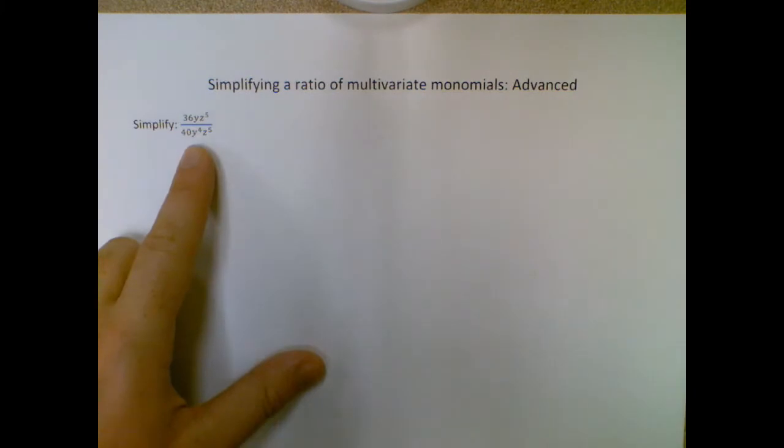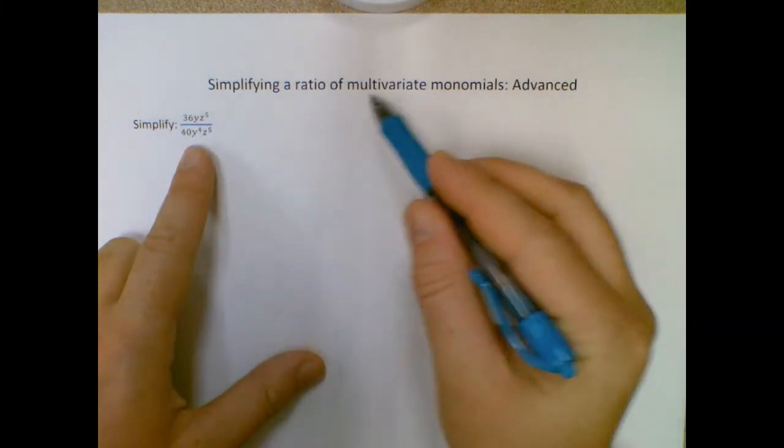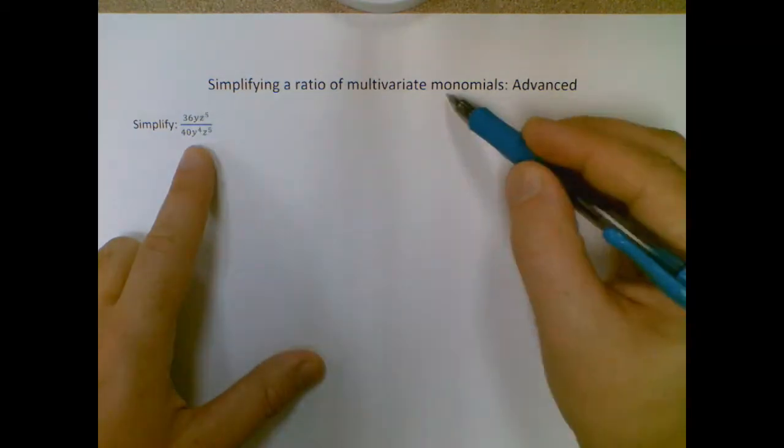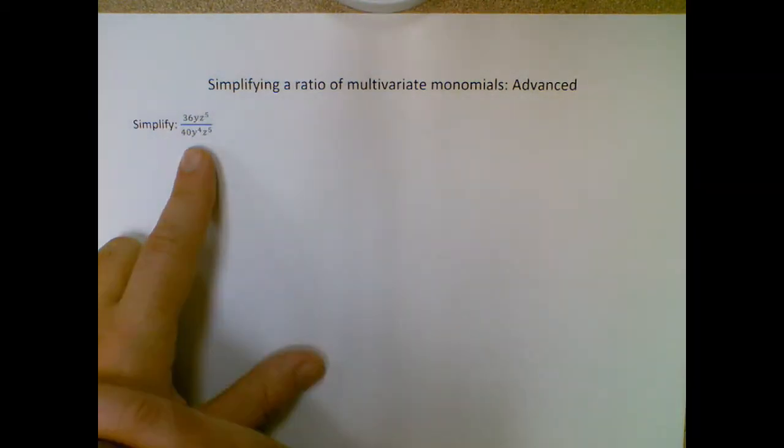We're going to have a few more things going on here, but they're still multivariate, which means there's more than one variable, in this case y and z, and they're still monomials, so I'm not going to have any addition and subtraction going on in either the numerator or the denominator.